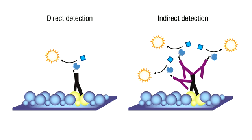Unlike the former approach, indirect detection allows multiple secondary antibodies to bind to each primary antibody, resulting in signal amplification.